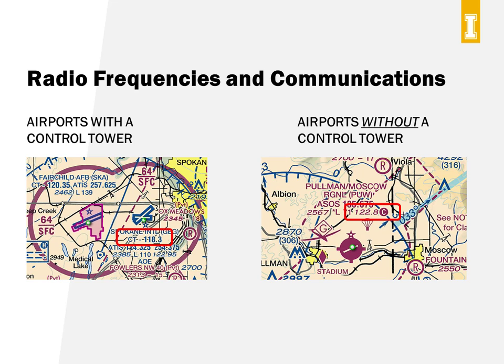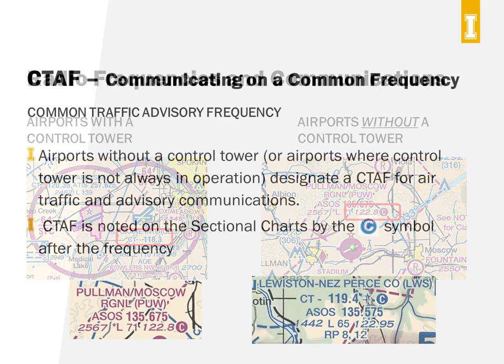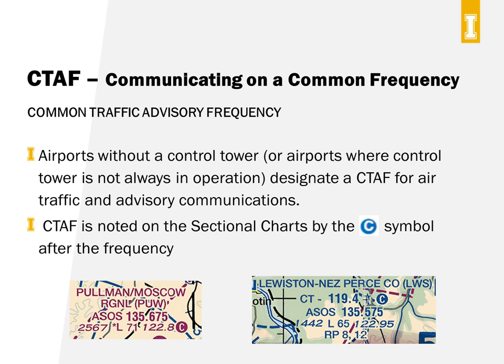But what about airports without a control tower? In those cases, there can be a couple of different frequencies that a pilot may need to be aware of, and this is where it gets tricky. Take a look at our local Pullman Moscow Regional Airport. The symbol is in magenta, so we know there's no control tower. The frequency used for radio communications is 122.8, and how do I know that? Because it has the C in the circle behind it, which designates it as the Common Traffic Advisory Frequency. The CTAF is the standard frequency used at non-towered airports for pilots to talk to the ground station and to each other. The CTAF is listed on the airport information of the sectional chart and is also in the chart supplement, denoted by the letter C inside a circle following the frequency.